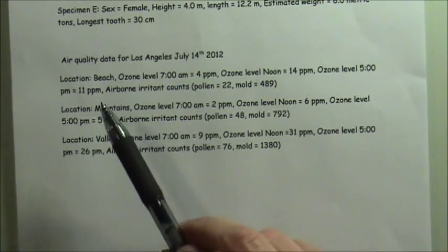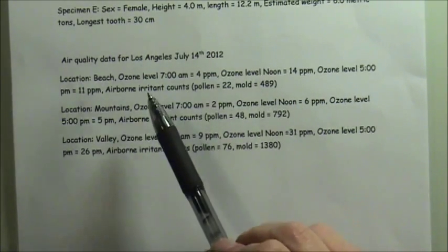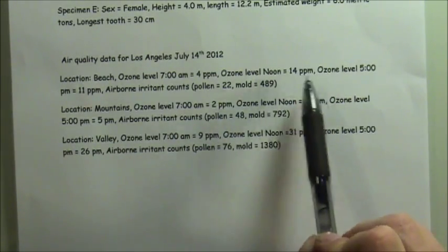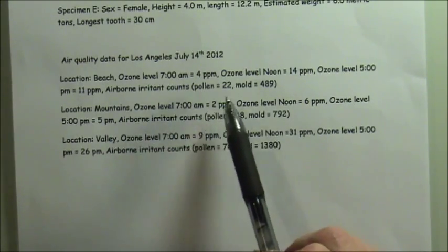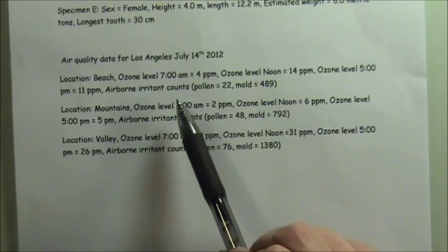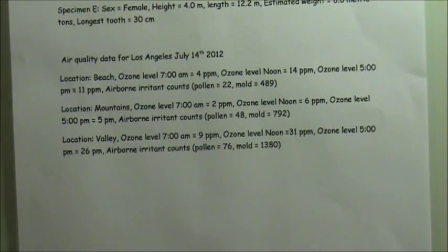And then secondly, we have airborne irritants, and there are two different types of airborne irritants. So the ozone level would get its own columns, each of the three. And the airborne irritants would each get their own column. There will be two of those. But because there is a commonality, there is something that they share in common, we're going to simplify the table just a little bit in order to account for that and reduce the repetitiveness.